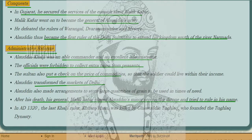Alauddin totally transformed the markets of Delhi. He made arrangements so that large quantities of grain could be stored and used when there was a shortage.